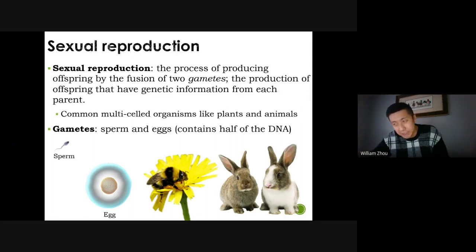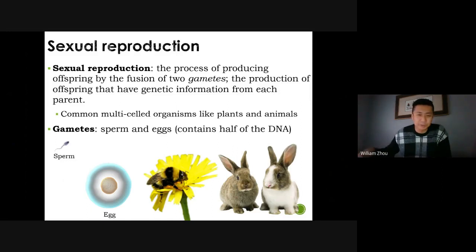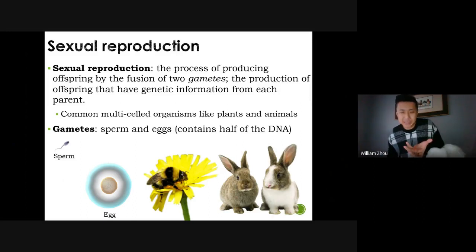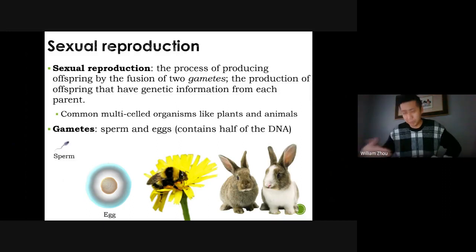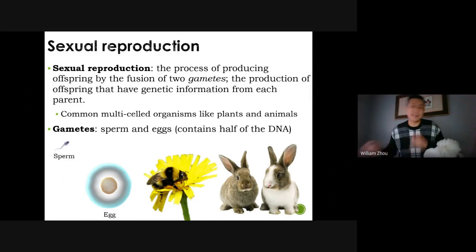There are disadvantages to sexual reproduction — it can be hard to find a partner. A lot of males in the animal world don't reproduce because they can't find females. It can also be dangerous; while in the act, you're defenseless against predators. Some organisms even suffer health-wise — the male praying mantis gets its head bitten off after reproducing.